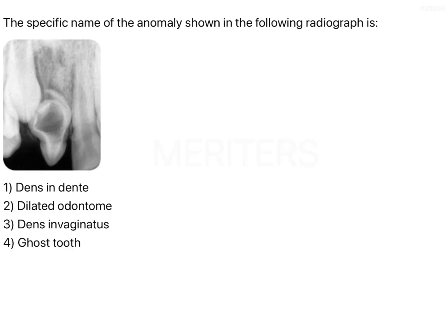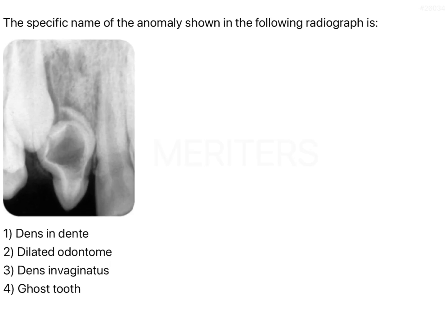The question asks for the specific name of the anomaly shown in the following radiograph. Let me increase the size so that it's easier to identify. What is visible in this radiograph is probably the permanent canine, and this is the central or the lateral incisor.